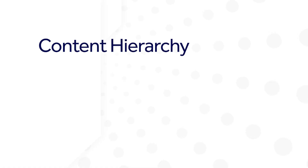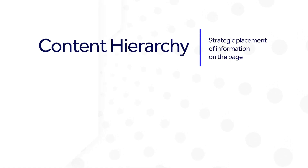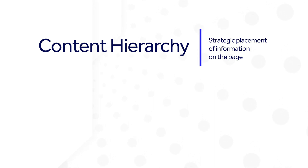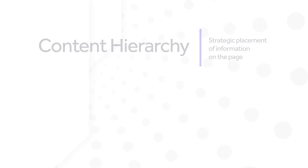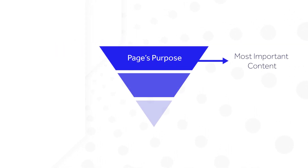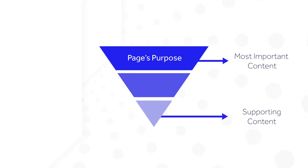But first, let's go over a few key terms. Content hierarchy is the strategic placement of information on a page. So the better a developer uses typography in the hierarchy, the easier it is for users to grasp the page's purpose. By placing the most important content at the top of the page and the supporting information below, the purpose becomes clear.